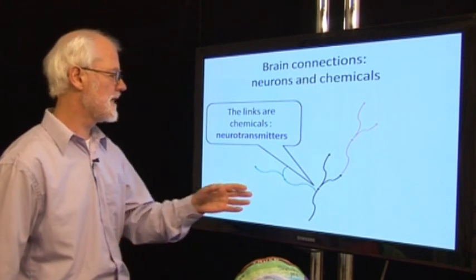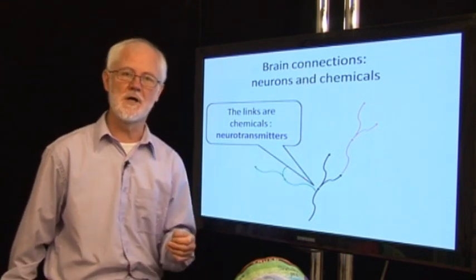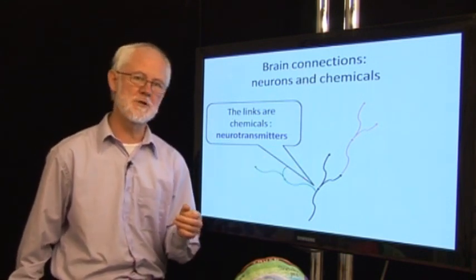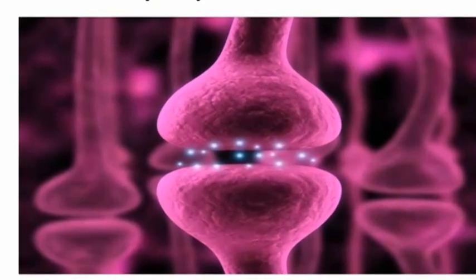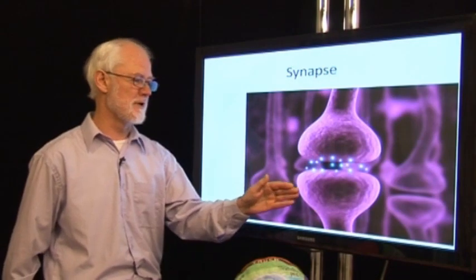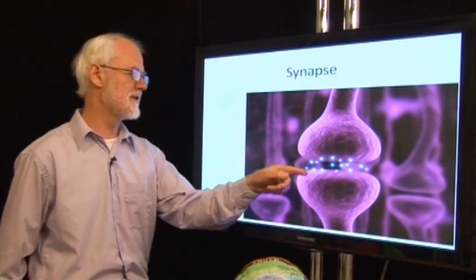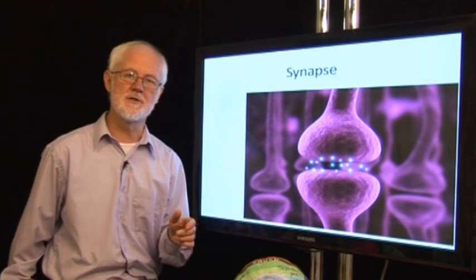If our brains were wired up from birth, no learning would be possible. The connection is called a synapse, and here is a diagram of it. When we are trying to develop memories, what we are trying to develop are these connections, these synapses. They start off as quite small and not very good connections.